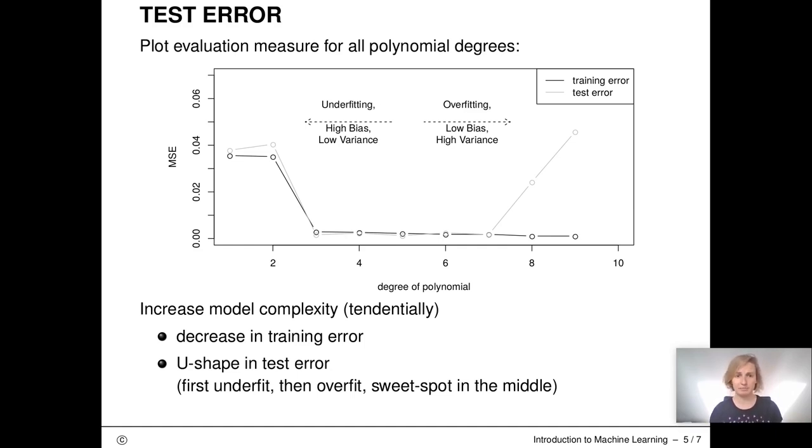The gray dots and the lines show the test error. The black show the training error. So we see that for small degrees the training and test error are almost the same. At some point though, the test error goes up while the training error keeps going down.